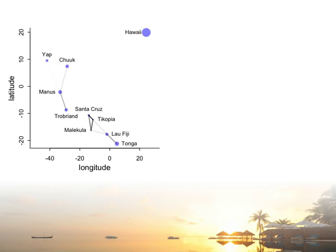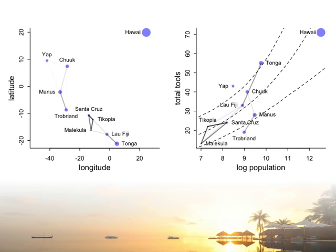On a map using latitude and longitude as a scatter plot — longitude horizontal, latitude vertical — this is the world's least high-tech map of the Pacific Ocean. The size of each point is the population size: Hawaii is the biggest point, with an order of magnitude more population at European contact than all other Oceanic island societies. Line segments connecting islands are shaded with intensity proportional to the correlation — islands near one another have stronger correlations.